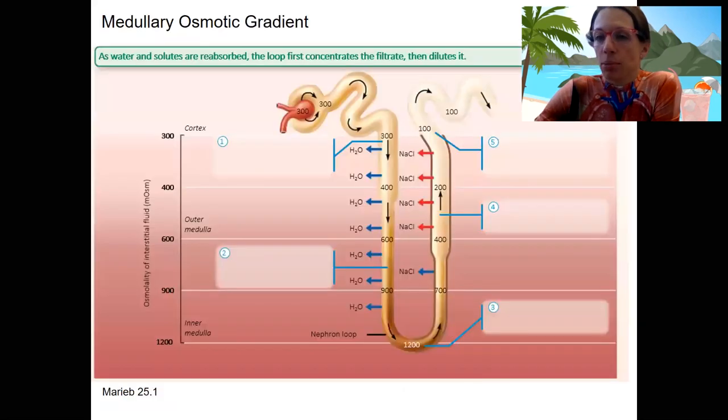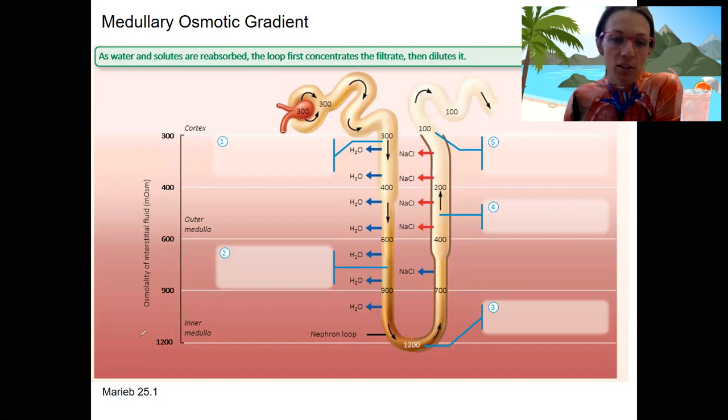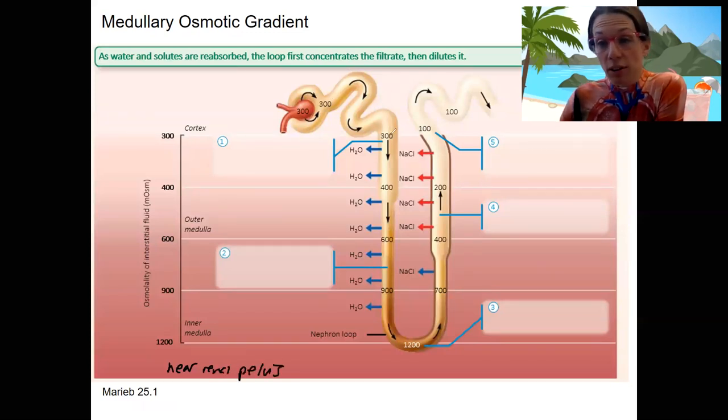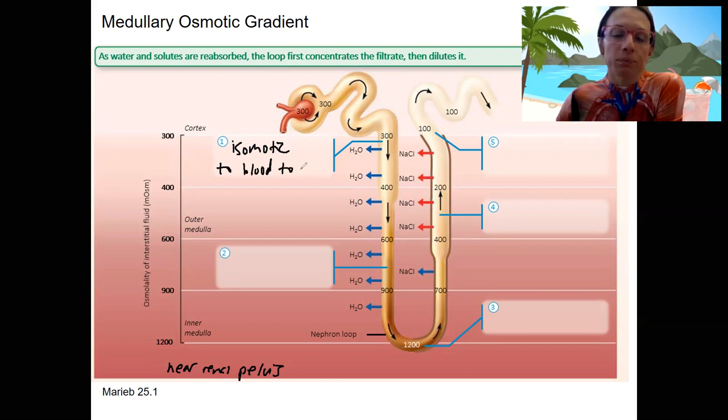This is the entire process. This would be a juxtamedullary nephron, we know that because it reaches all the way down to the inner medulla. These are the only nephrons that reach that far down near the renal pelvis. The filtrate entering this nephron loop is 300 milliosmoles, so isoosmotic to the blood and to the ISF at this location.